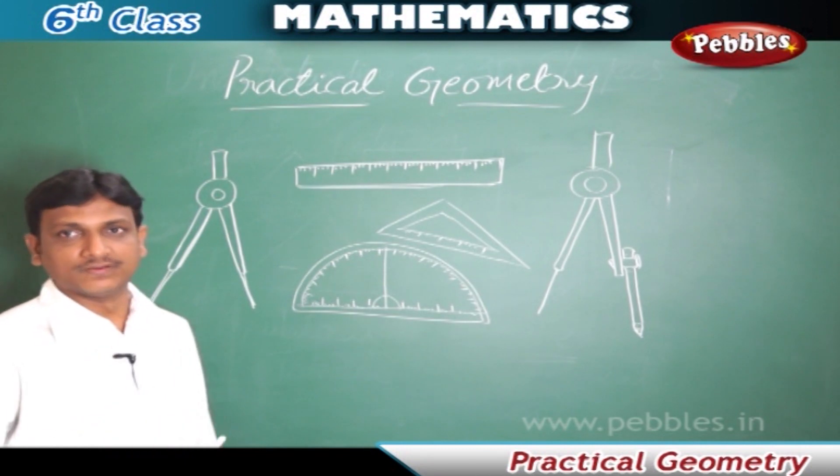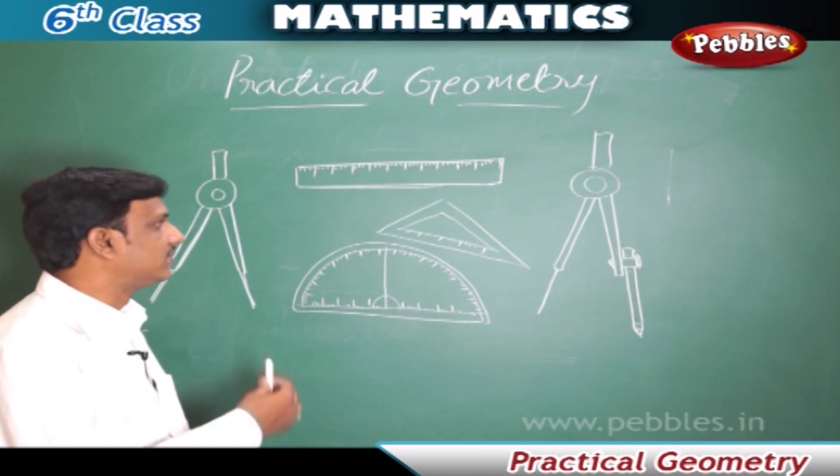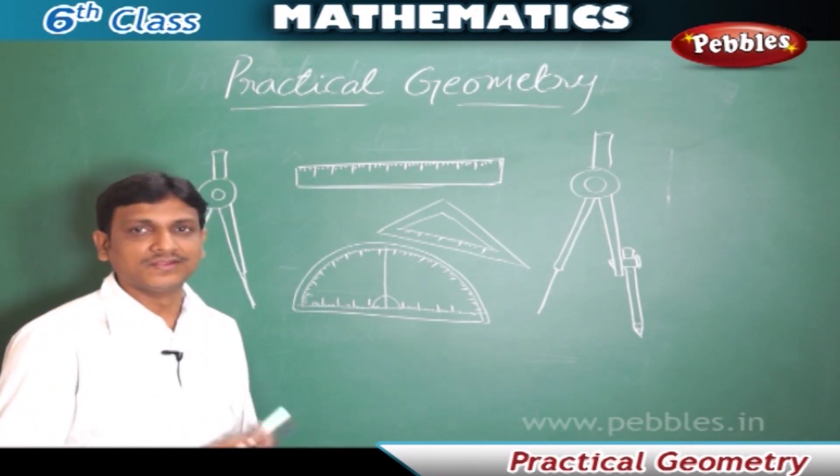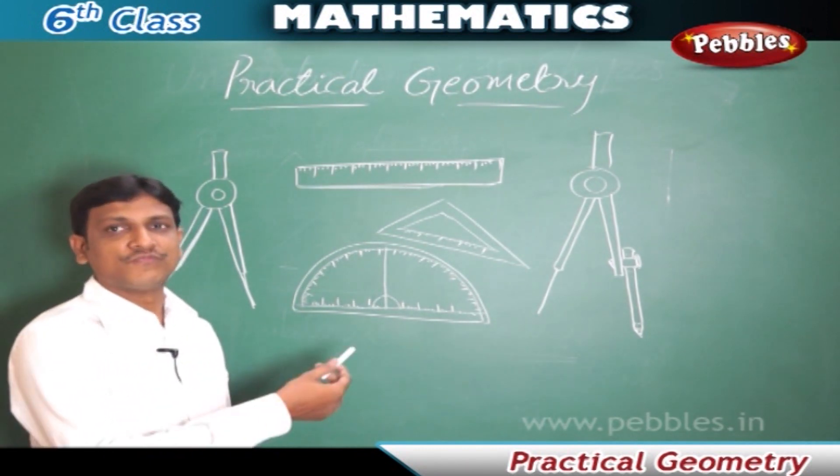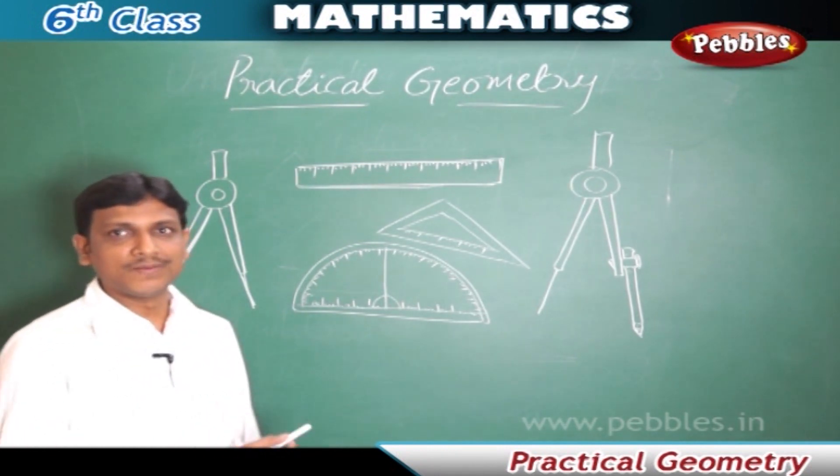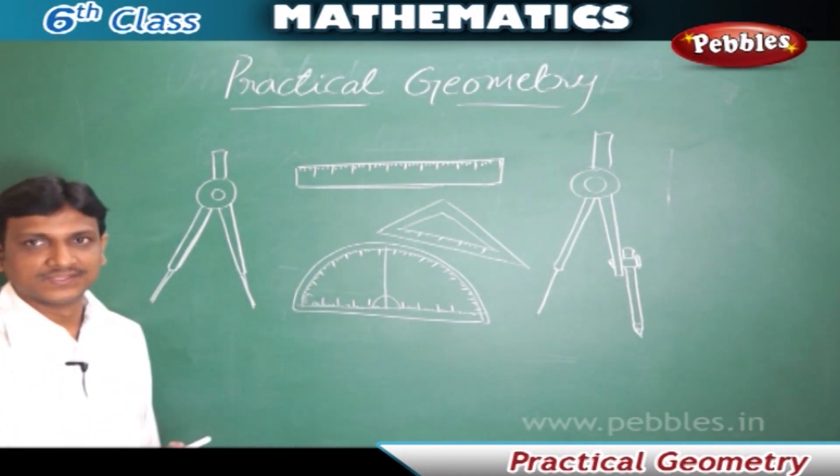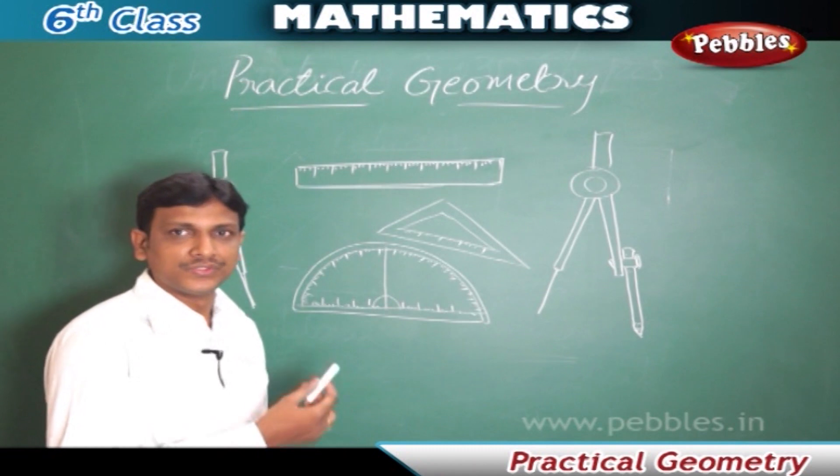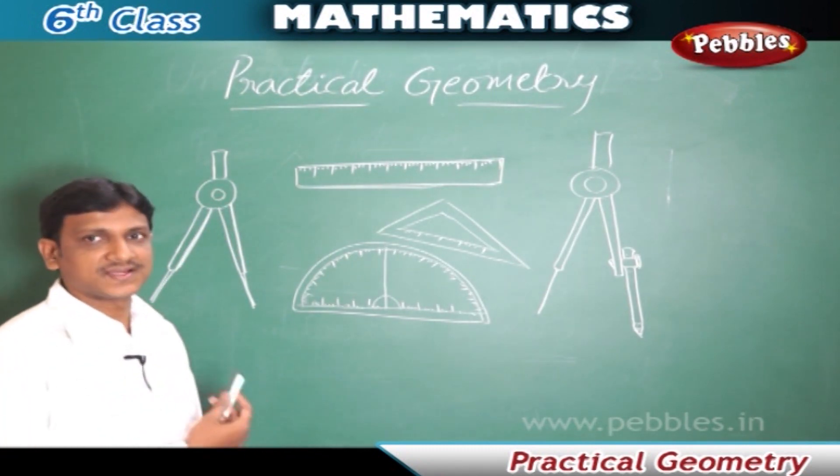We need to have certain tools: the compasses, the ruler, divider, protractor, and scale. Where do we find all these? We find all these geometrical instruments in our geometrical box. The geometrical box contains all these instruments which let you draw a geometrical figure with accurate sizes and angles.